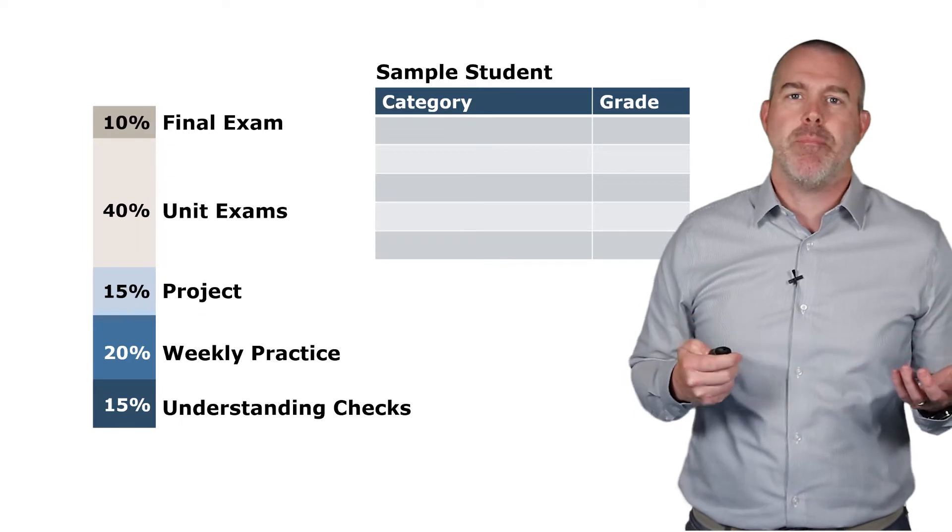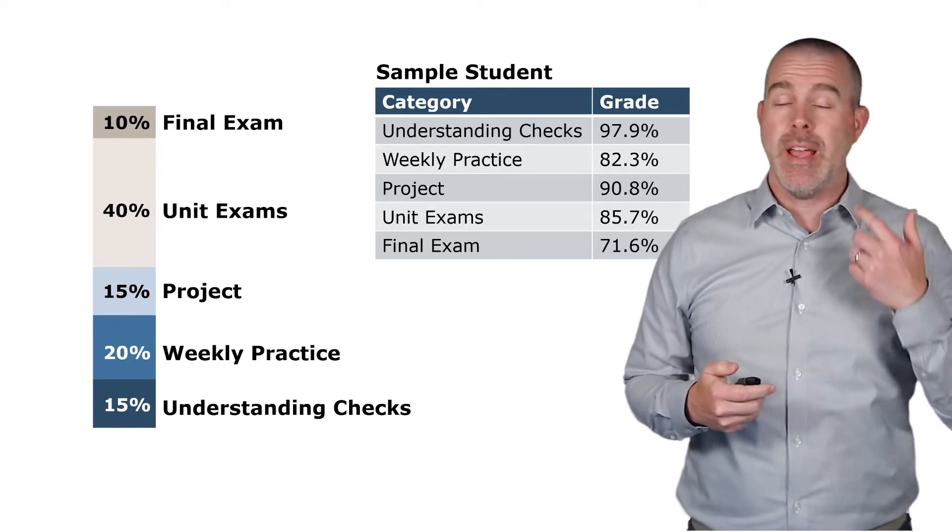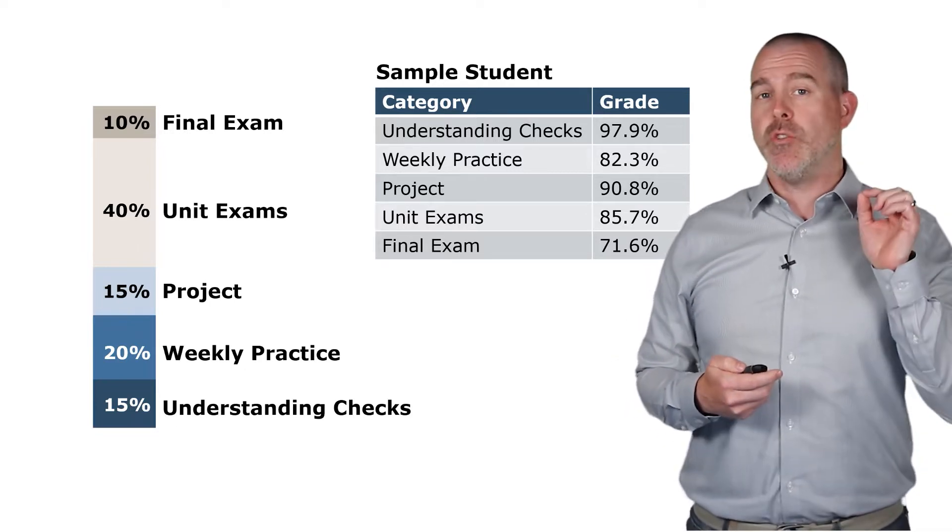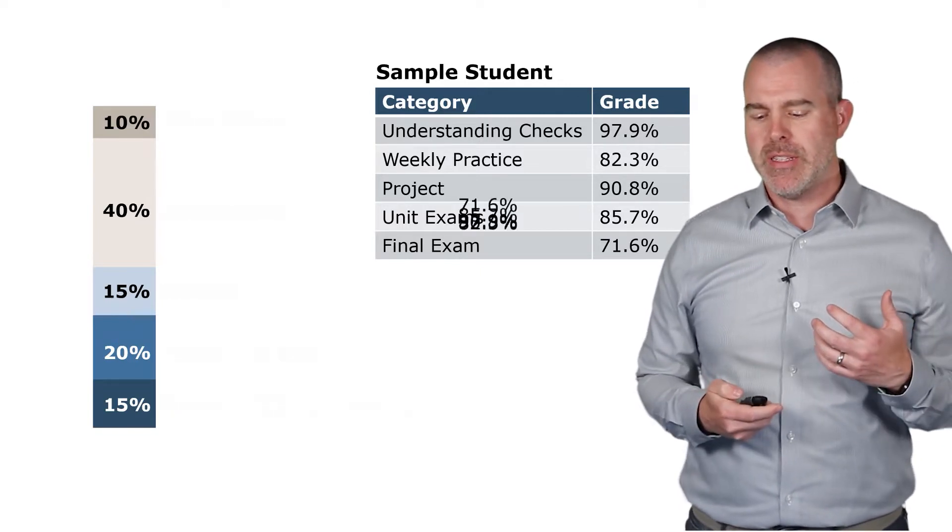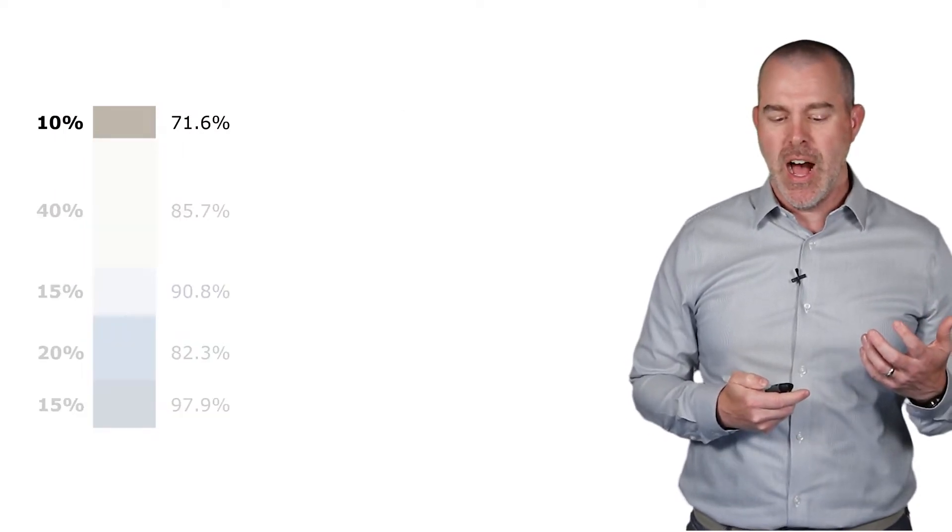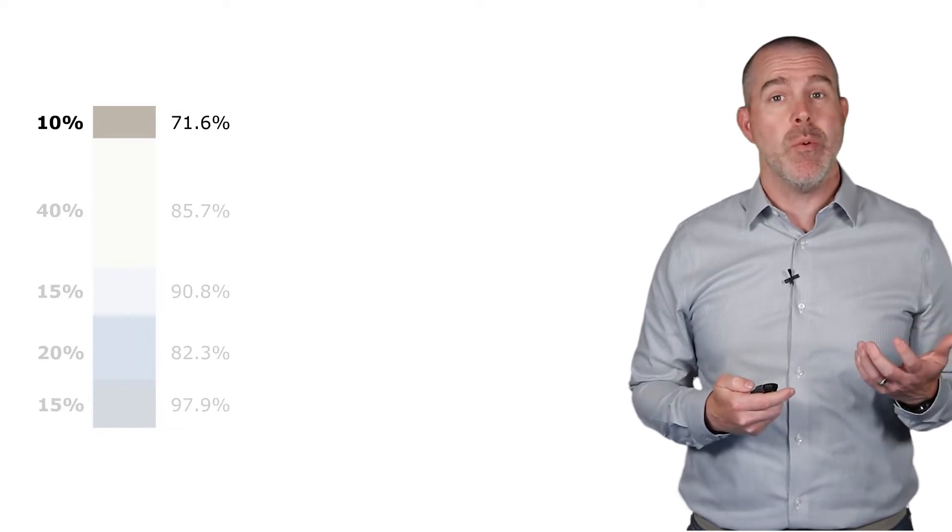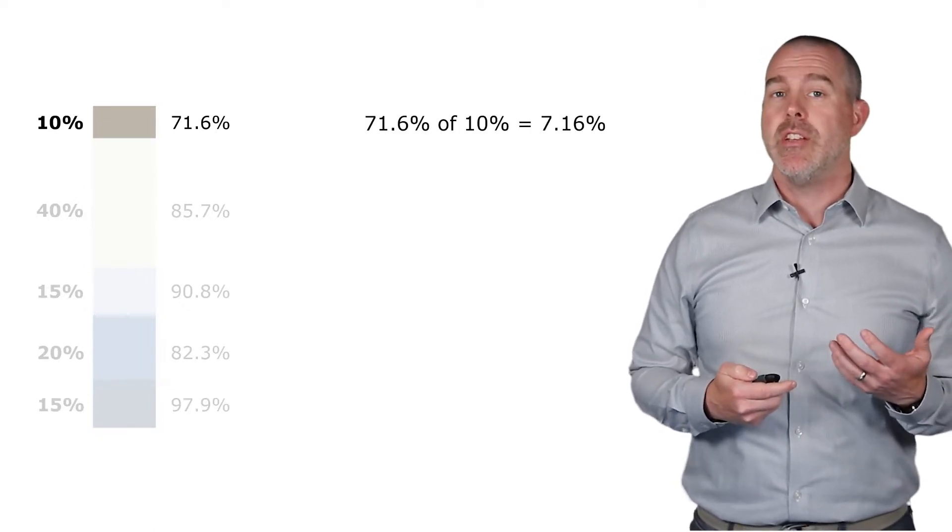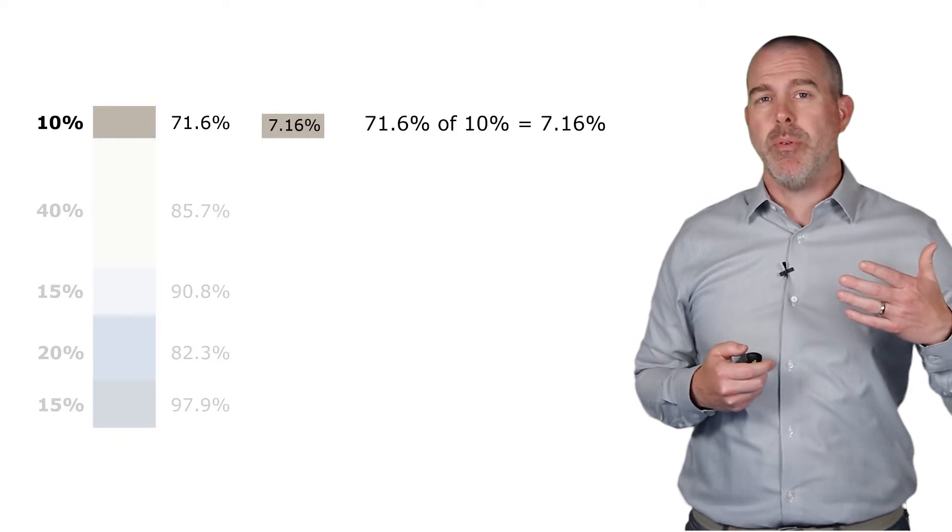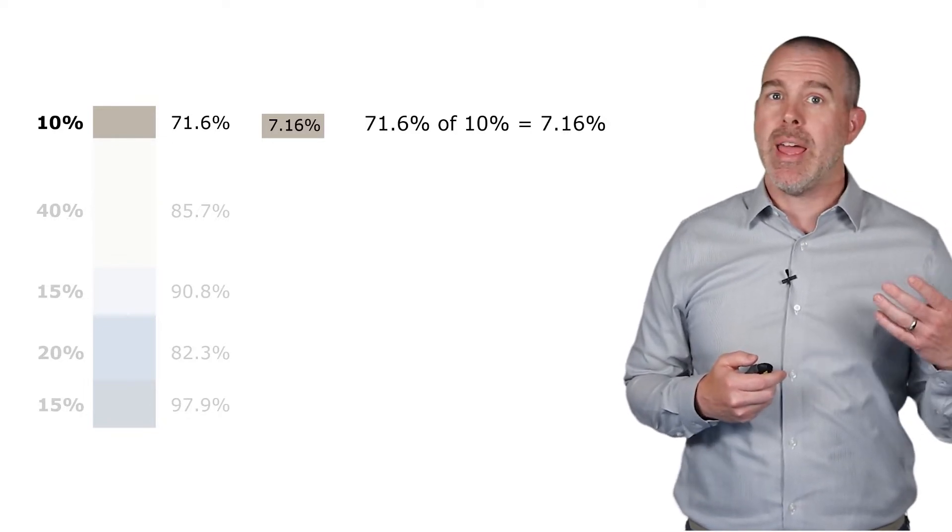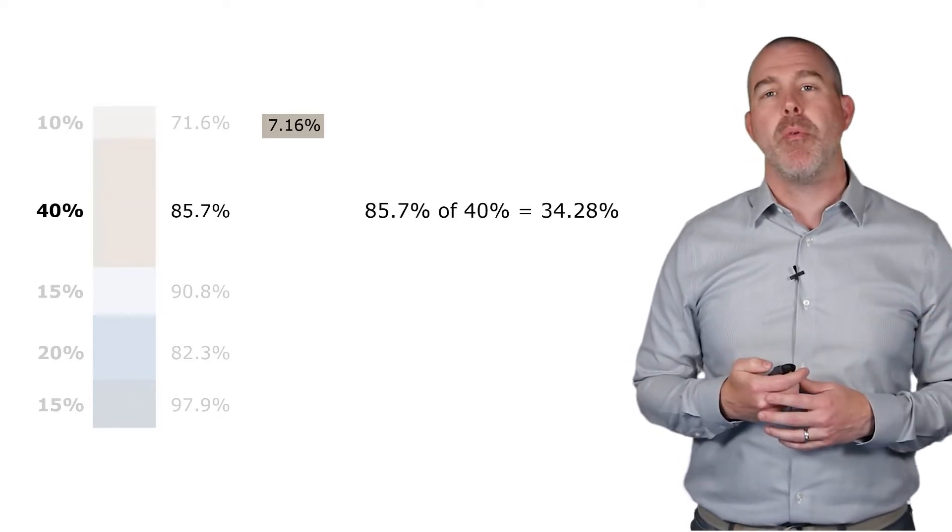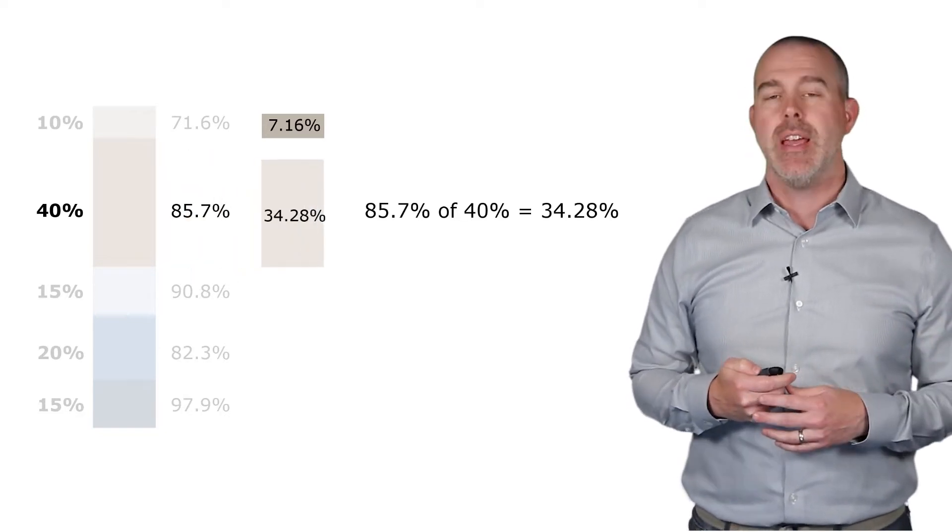So what if we have a certain sample student and this student has these particular grades at the end of the semester? The question is, what is their overall grade in the course? Well, that's where these weights come in—that's why this is called the weighted mean. So let's pull these categories over by their grades. We have 10% of 71.6%, or should I say 71.6% of 10%. So instead of a full 10% in that category, this student has 7.16%. So the 71.6% gets weighted by 10%. The 10% is the weight.